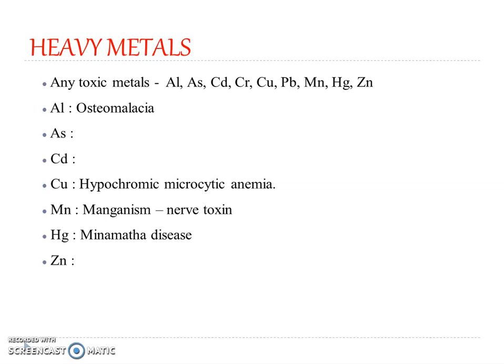The major toxic metals of concern include aluminum, arsenic, cadmium, chromium, copper, lead, manganese, mercury and zinc. We will be dealing with each of these heavy metals, their role in nature as well as what happens when these heavy metals enter the organisms and how they affect the organisms as well as the environment.